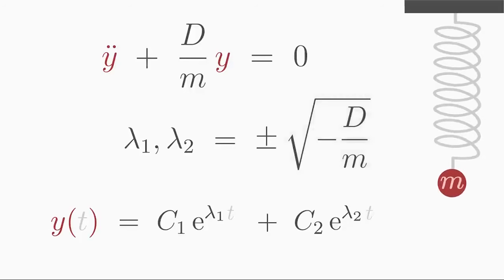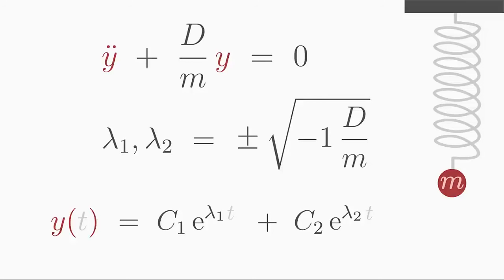Even if you don't know imaginary or complex numbers yet, you can split the term inside the square root into a product of minus 1 and D over m. According to the square root laws, you can split this product into two square roots.